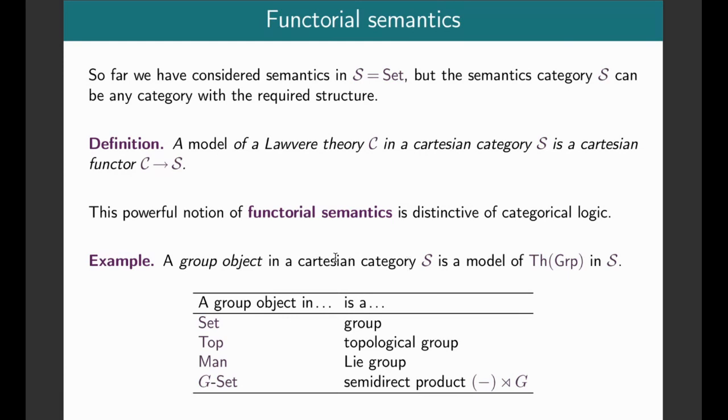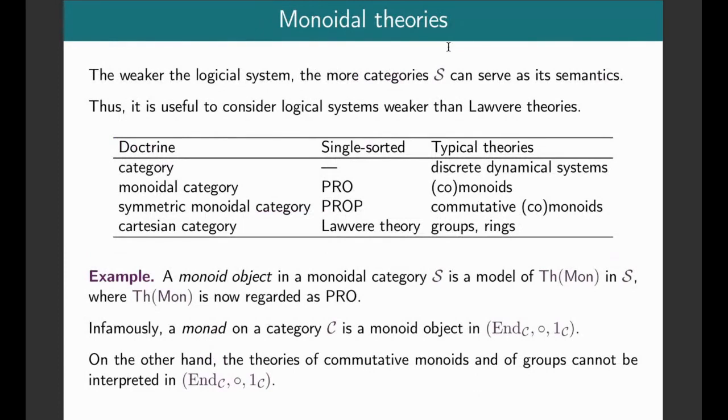This is a pretty distinctive feature of categorical logic. A group object in a particular Cartesian category is going to be a model of the theory of groups in that category. A group object in set is of course a group. A group object in the category of topological spaces is a topological group. A group object in smooth manifolds is a Lie group. A group object in the category of group actions by some fixed group G turns out to be a group that is a semi-direct product by G.